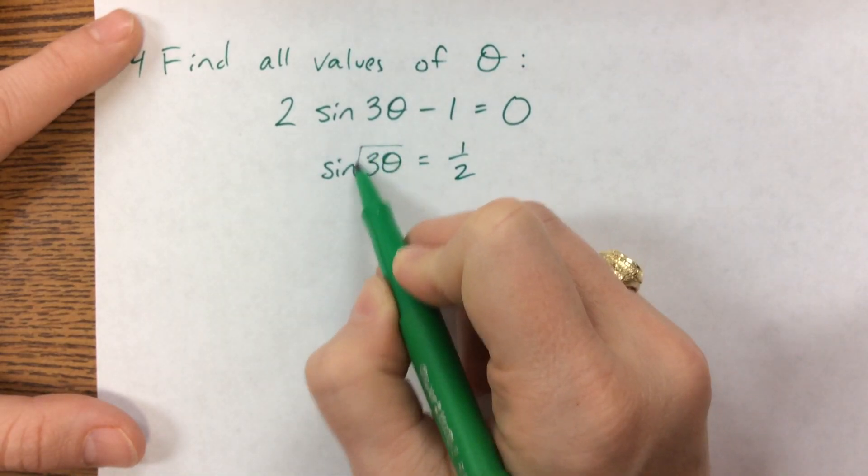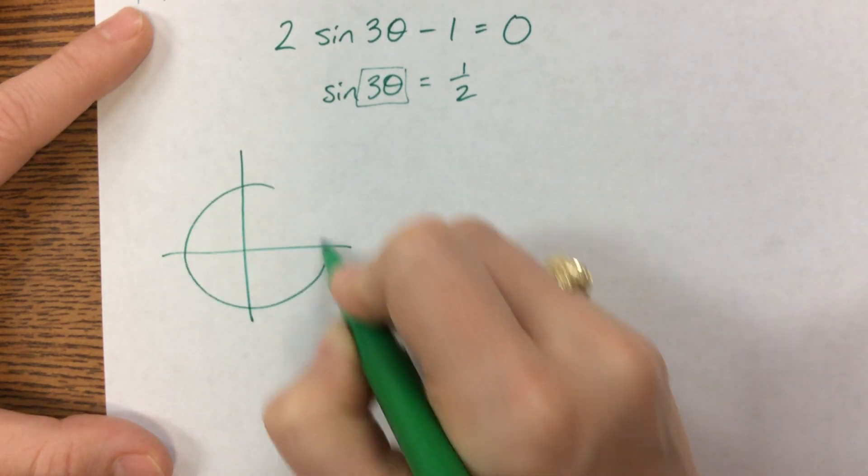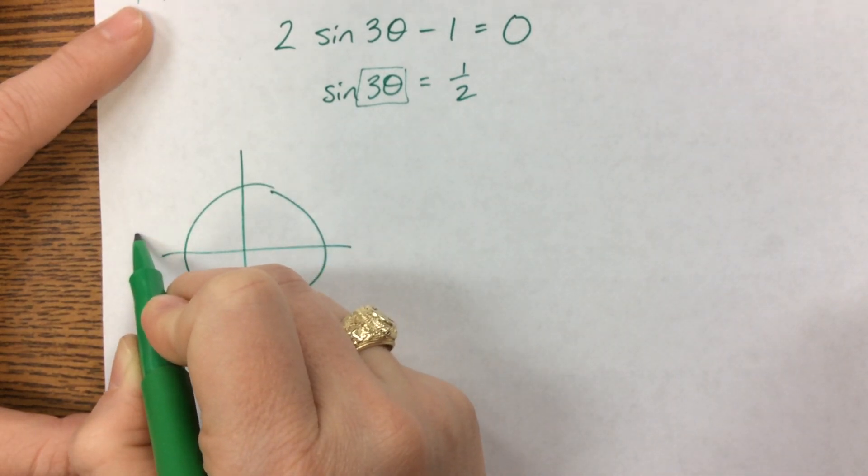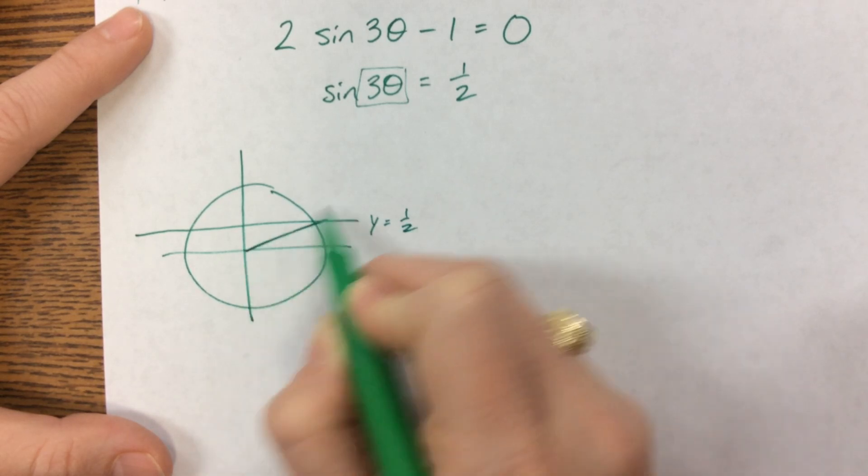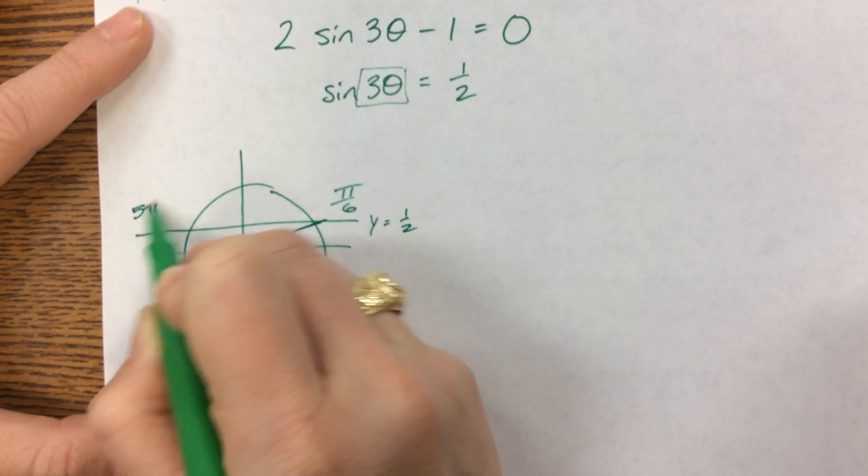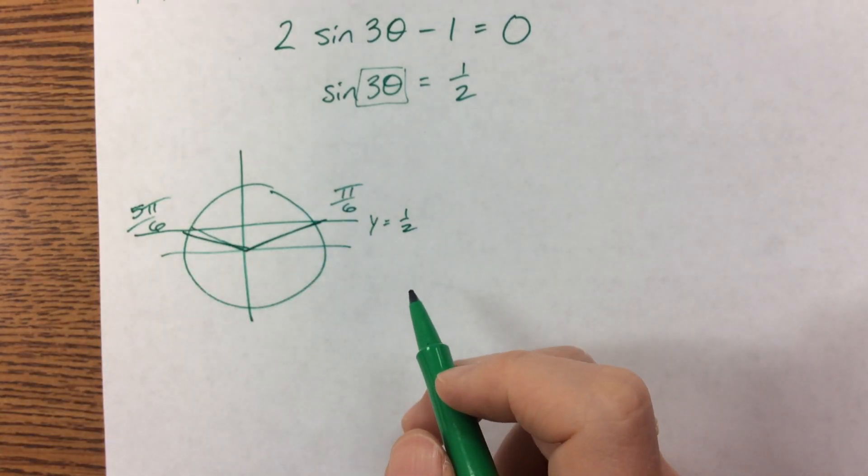And I'm going to ignore this for just a minute and think about when is sine equal to 1 half? Sine is the y value, so when does y equal 1 half? That's over here at pi over 6. That's and 5 pi over 6. Let's see what I'm trying to pretend I can draw correctly.